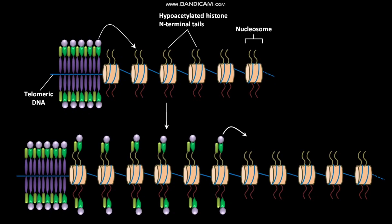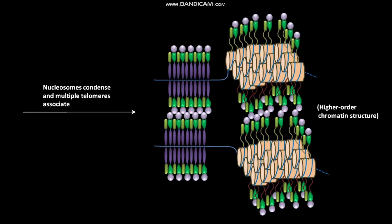As a result, the region of hypoacetylated histones with associated SIR2, SIR3, and SIR4 spreads. Due to the interactions between complexes of SIR2, SIR3, and SIR4, the nucleosomes condense and multiple telomeres associate. As a result, higher-order chromatin structure is generated, which sterically blocks other proteins from interacting with the underlying DNA.